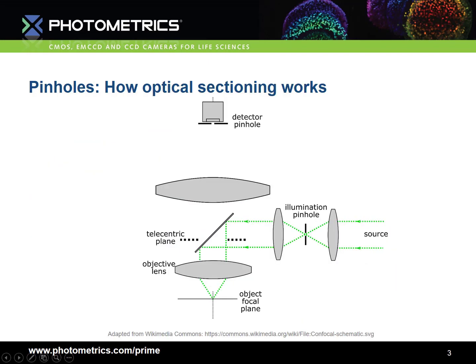The solution to this problem is to only allow light from our chosen focal plane to reach the detector. This is achieved through blocking light from other focal planes by placing a pinhole in the optical path. This is a so-called optical sectioning technique, meaning we are able to choose which vertical section of the sample we want to look at. The way this works is fairly simple. Light from our chosen focal plane will pass through the optical system and come to a tight focus within the aperture of the pinhole. This light will pass through to the detector.